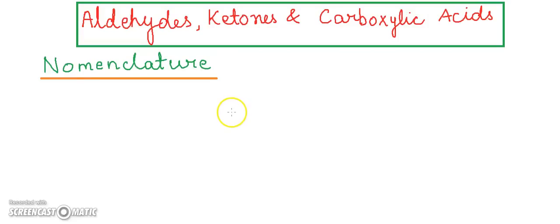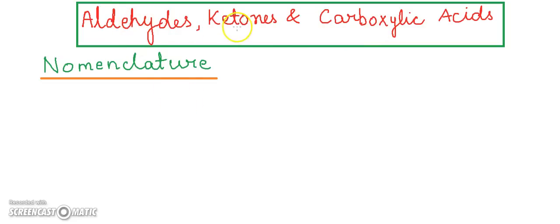Welcome to the chemistry class. Today we will learn about the nomenclature of aldehydes, ketones, and carboxylic acids. First, we will learn the nomenclature of aldehydes and ketones. For naming aldehydes and ketones, we have a common system and an IUPAC system.